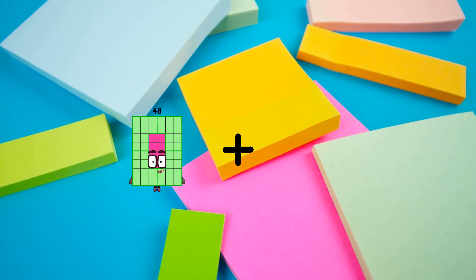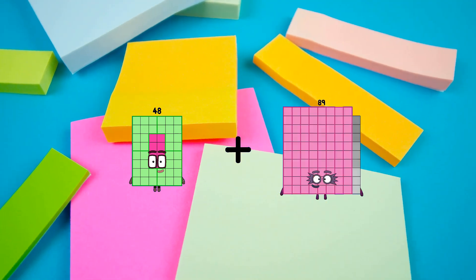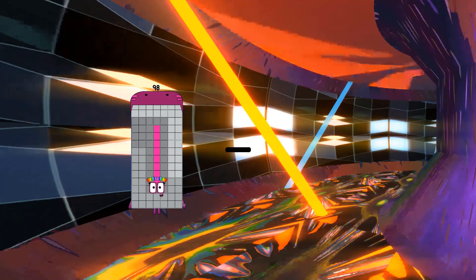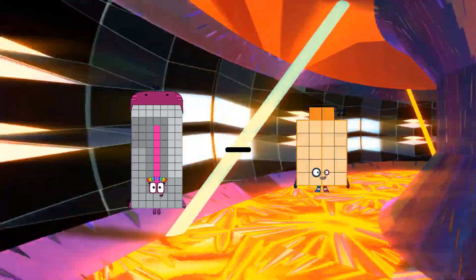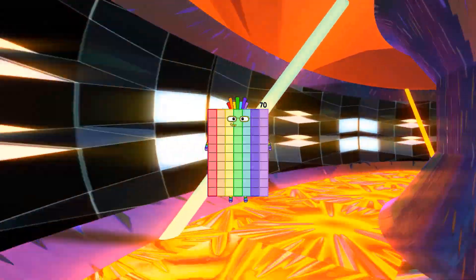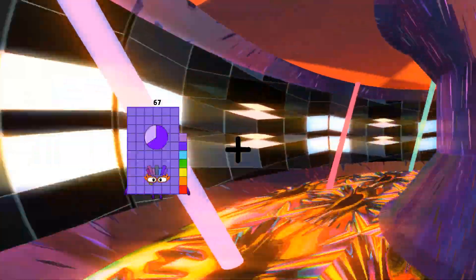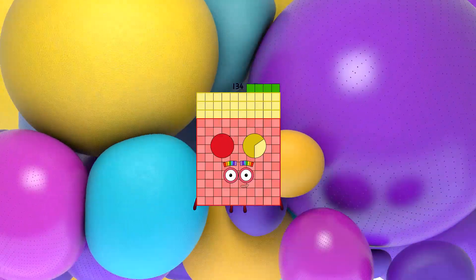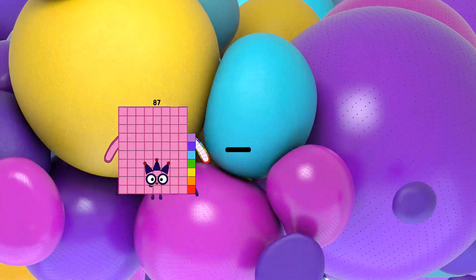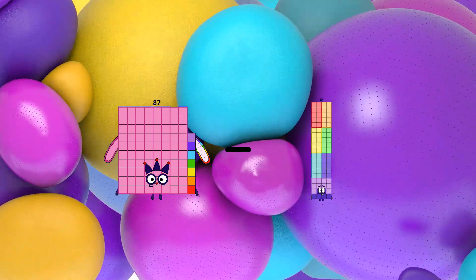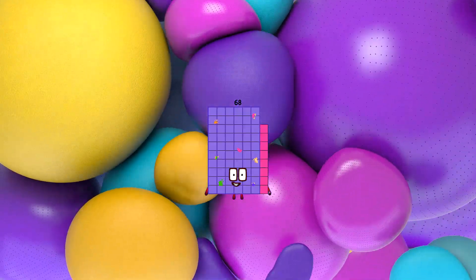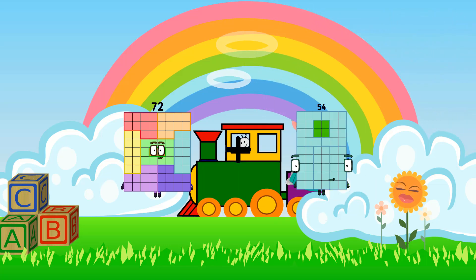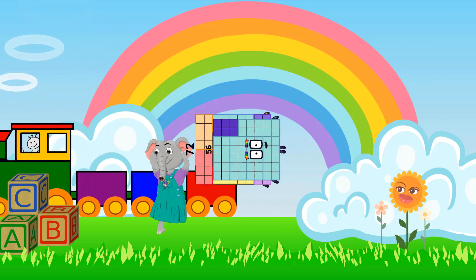48 plus 84 equals 132. 98 minus 28 equals 70. 67 plus 67 equals 134. 87 minus 19 equals 68. 72 plus 56 equals 128.